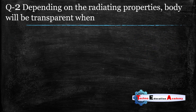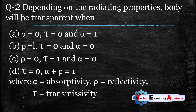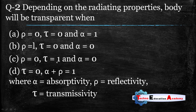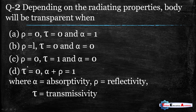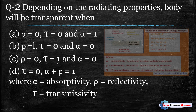Question number two: depending on the radiating properties, a body will be transparent when? In case of a transparent body, the radiation is transmitted — it will not absorb and it will not reflect. So its transmissivity tau equals one. Reflectivity rho is zero and absorptivity is zero, but transmissivity is 100%. So the right answer is option C.